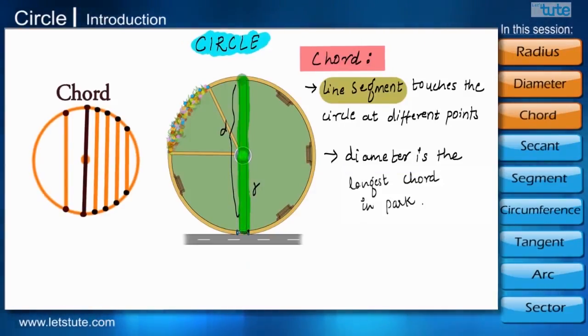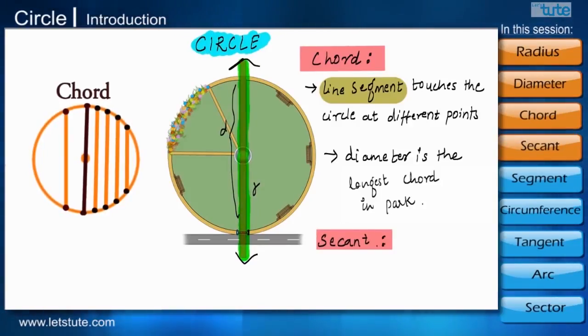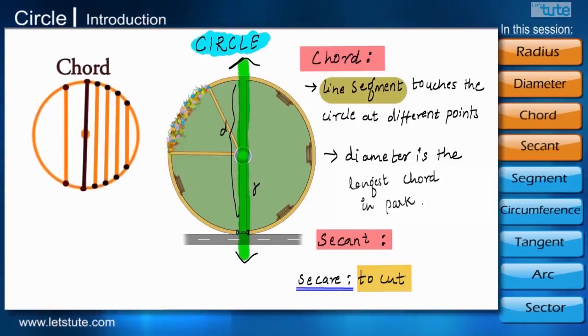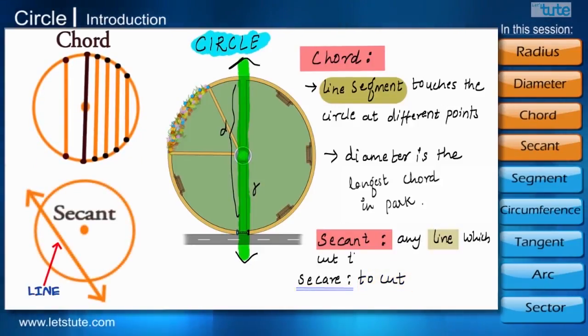Now if the same road extends on both the sides outside the park, then that road can be called as a secant of the park. Secant in Latin means to cut and hence any line which cuts the circle is called as a secant.